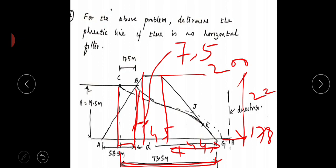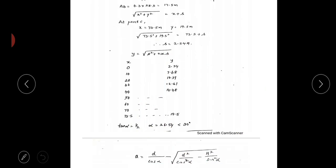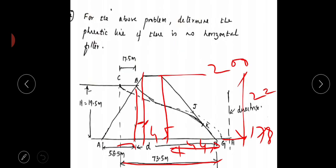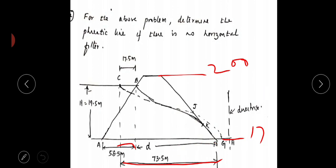So this is the profile of the dam. Next we'll start with the problem. First, as in the previous problem, you have to go for the phreatic line. This is the starting point of the phreatic line (G point) and this is the end point.